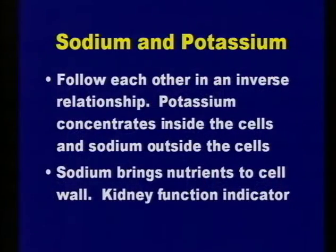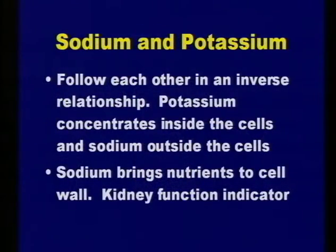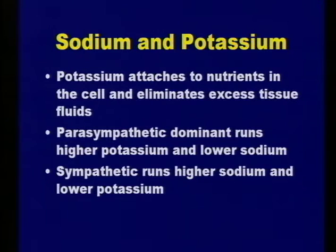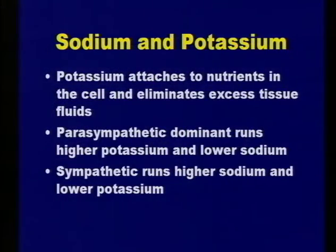Next are sodium and potassium, which are like calcium and phosphorus on a teeter-totter—they run in conjunction with each other. Potassium is concentrated inside the cells and sodium outside the cells, and they help regulate fluid balance in the body. They bring nutrients to the cell and are good kidney function indicators. Potassium attaches to nutrients on the cell and eliminates excess tissue fluids—it helps pull nutrients in and eliminate waste from the cell. Parasympathetics tend to run higher in potassium and lower in sodium, while sympathetics run higher in sodium and lower in potassium.